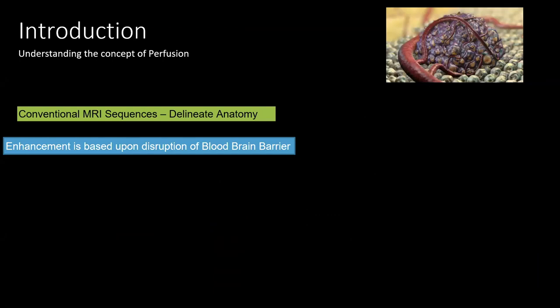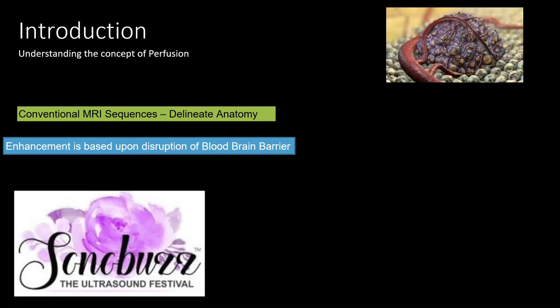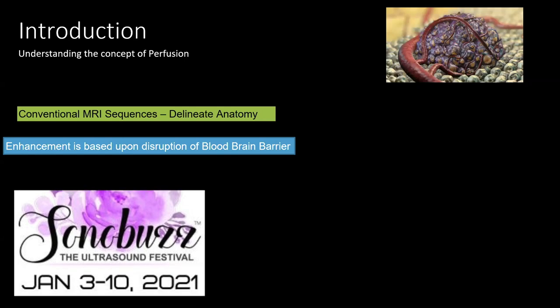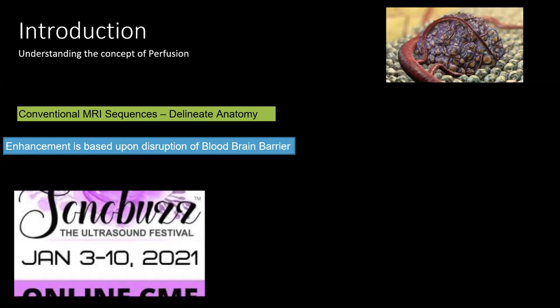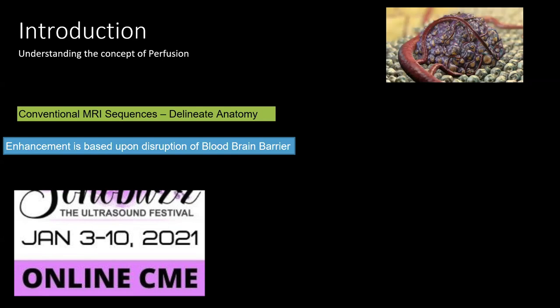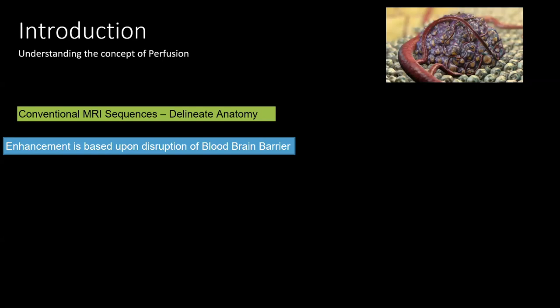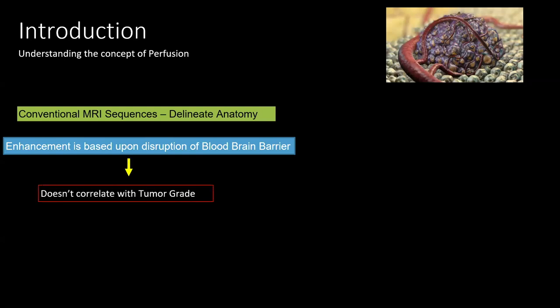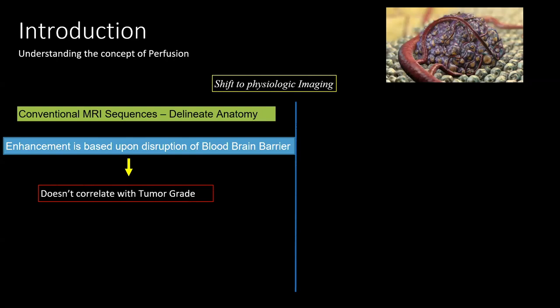Let us start by understanding the concept of perfusion. As we all know, conventional MRI sequences including post-contrast imaging delineate anatomy. The various patterns of enhancement which we get are secondary to disruption of the blood-brain barrier. This makes it clear that enhancement does not correlate with tumor grade, and therefore there was a need for shifting to physiologic imaging.